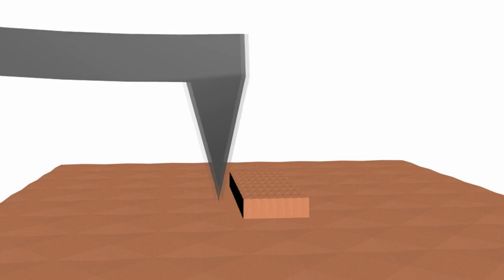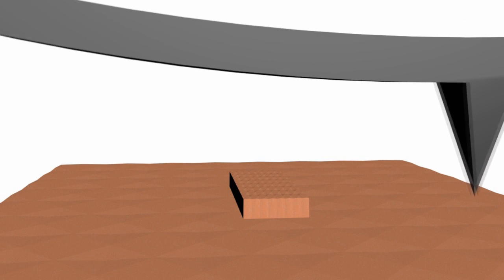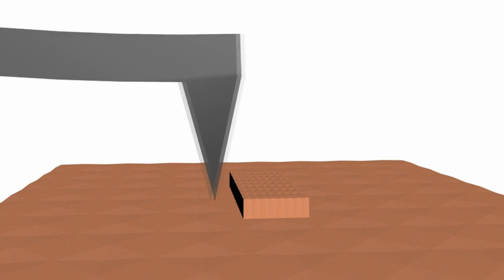There are three basic AFM imaging modes: contact, non-contact, and tapping mode. In the case of contact mode, the tip is in contact with the surface. This is good for studying hard surfaces.